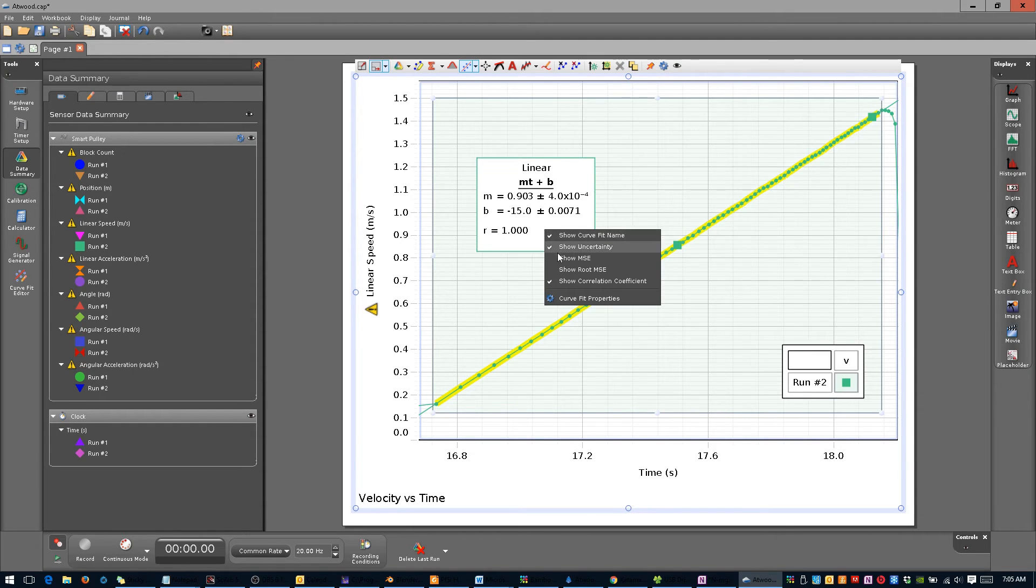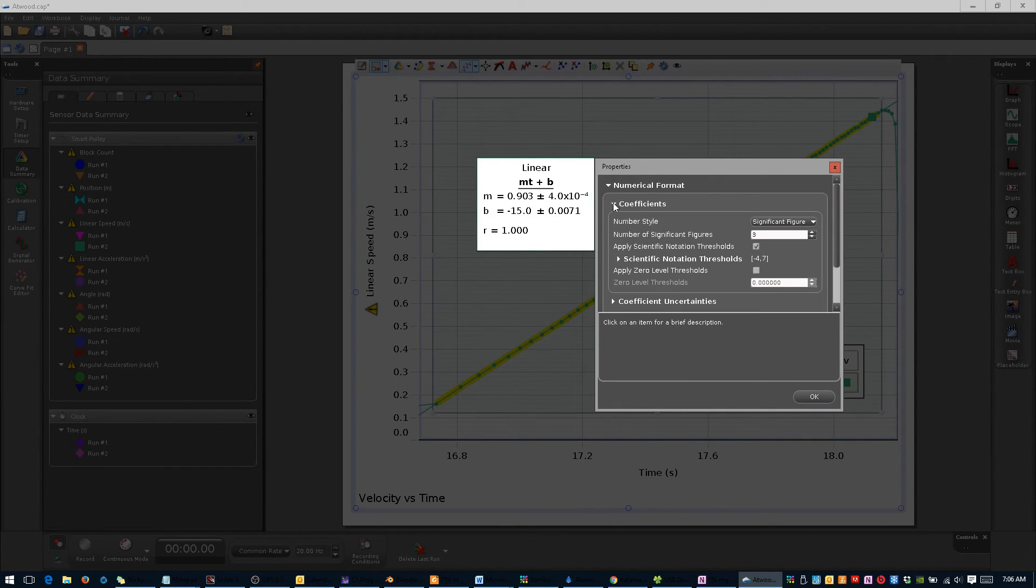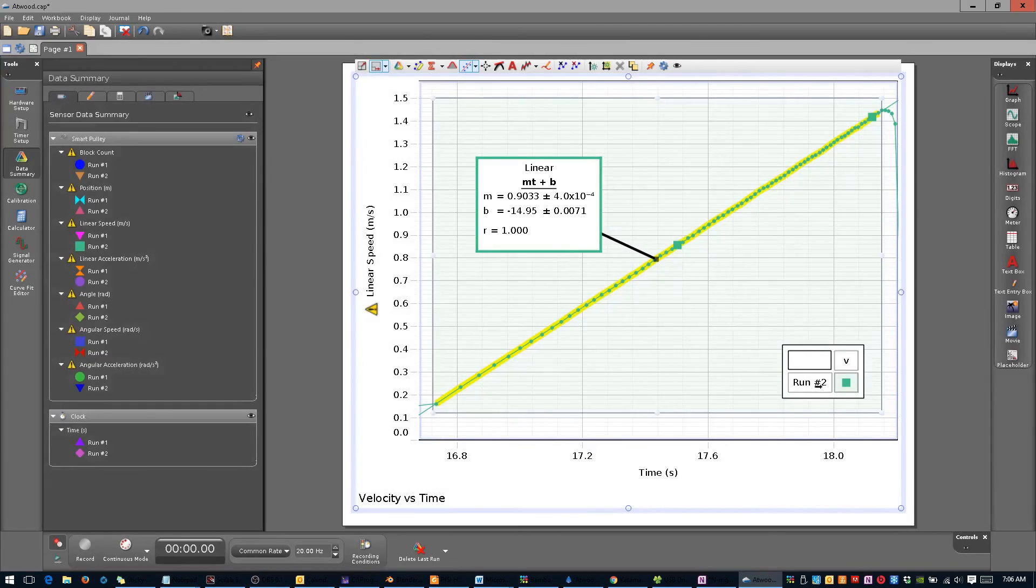Click Numerical Format, and then click Coefficients, and then increase the number of significant figures from 3 to 4. Click OK. This is now a good figure, and is worth including in your report. Record the slope of the line.